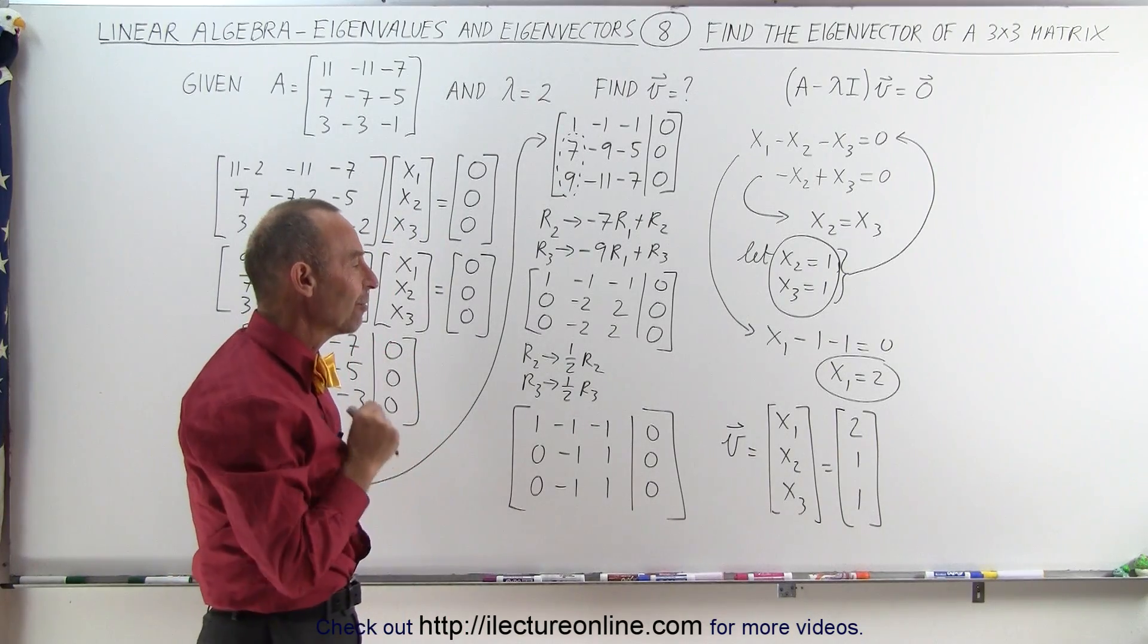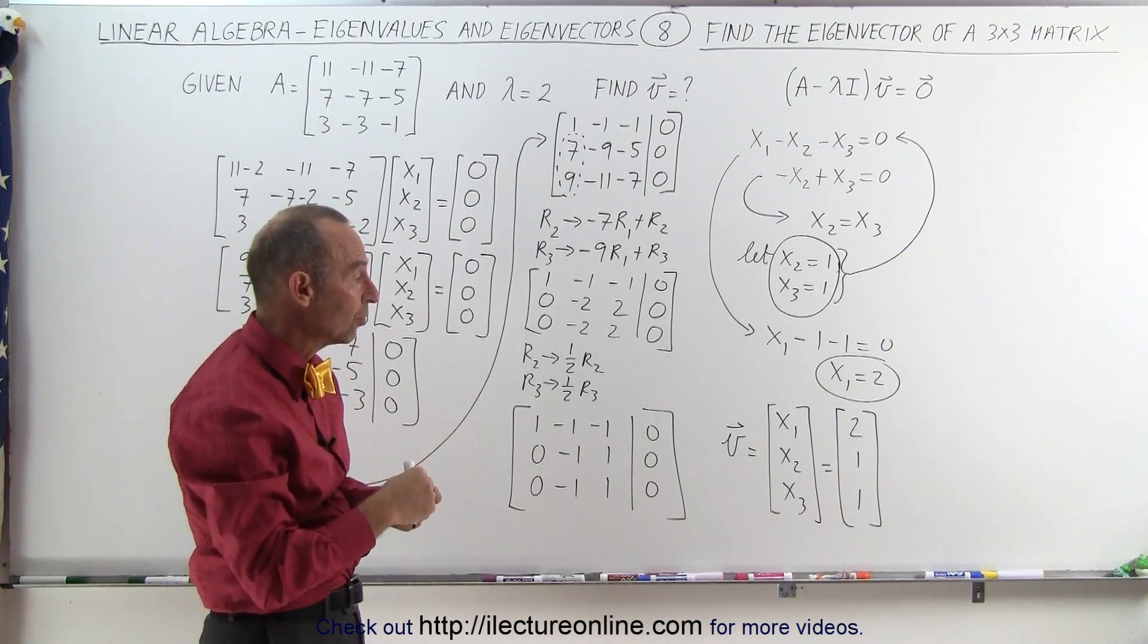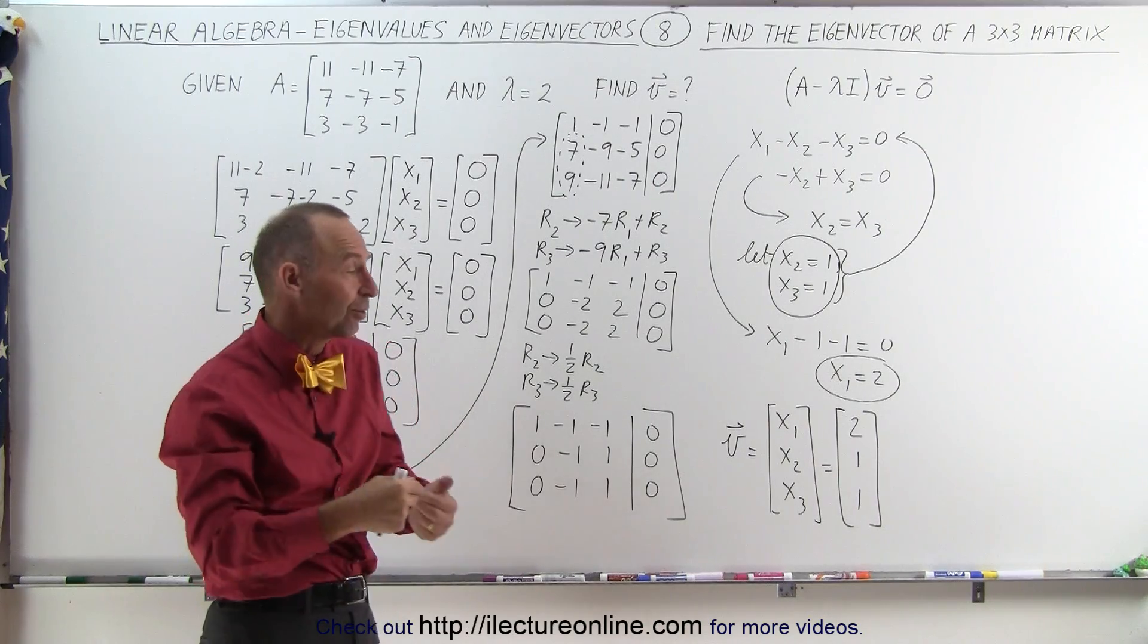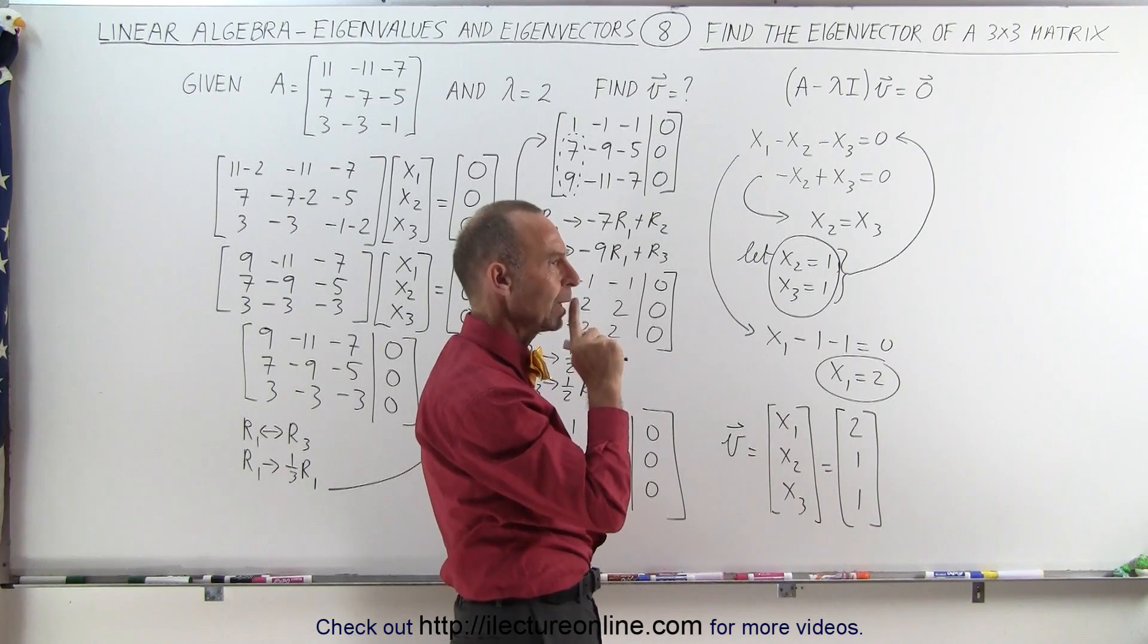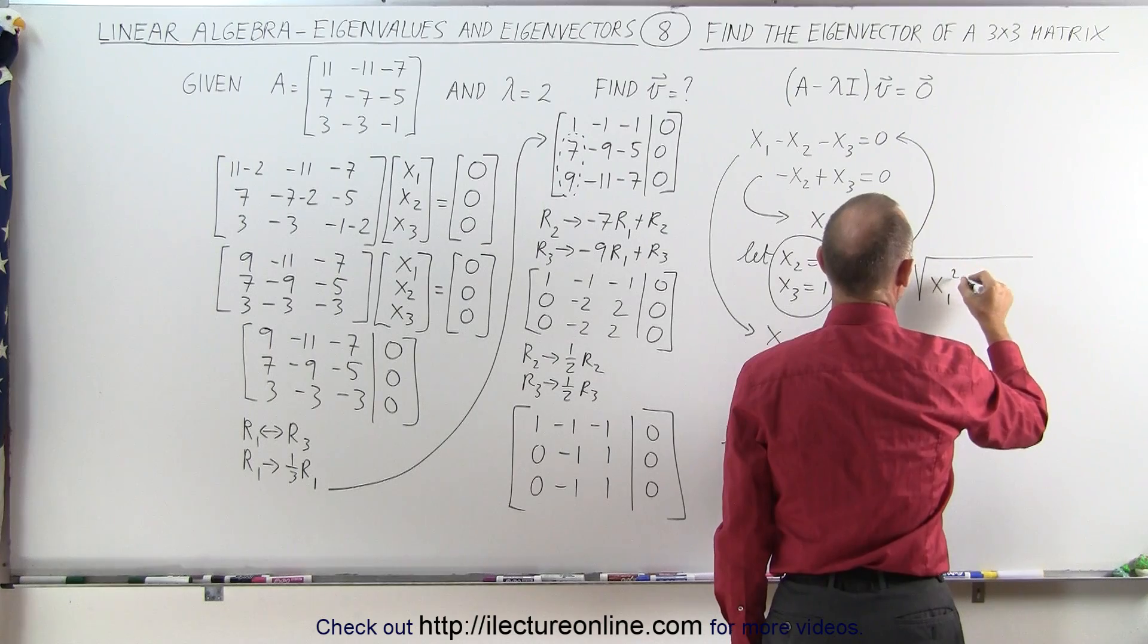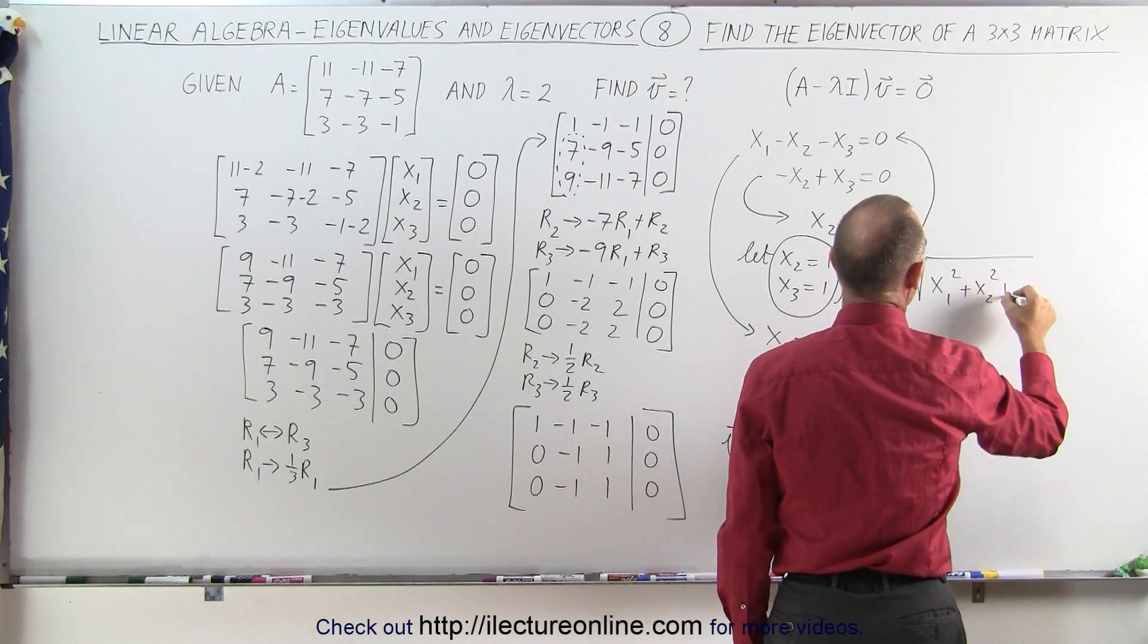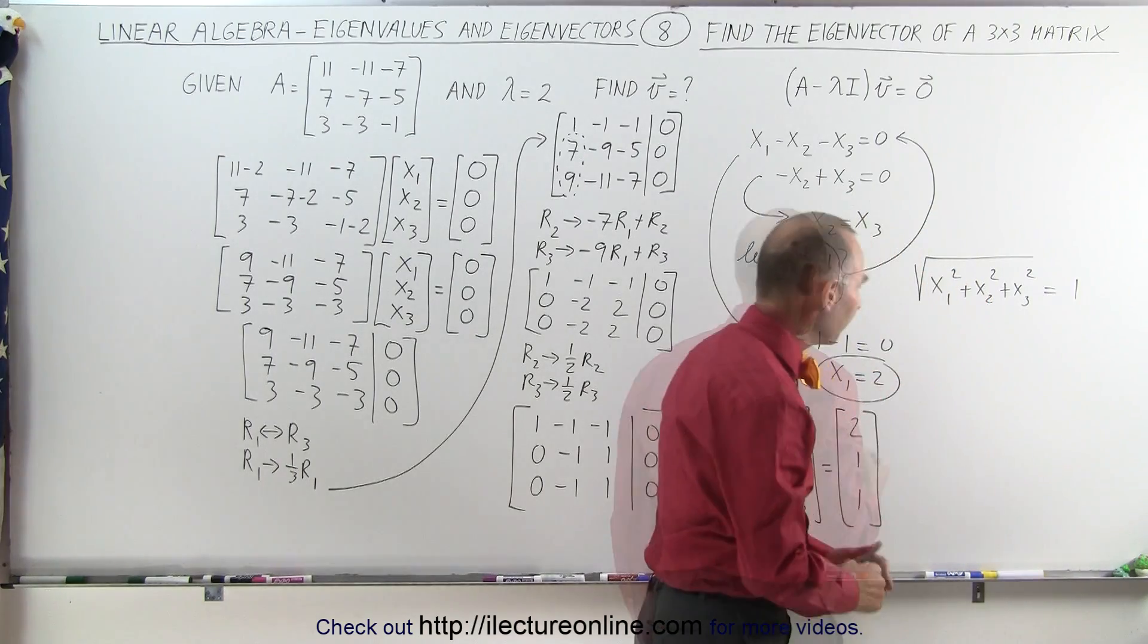Sometimes, we want to normalize the vector. In other words, we want the sum of the squares, the square root of the sum of the squares of the components of the vector to equal 1. In other words, what I want is I want the square root of x1 squared plus x2 squared plus x3 squared to be equal to 1.